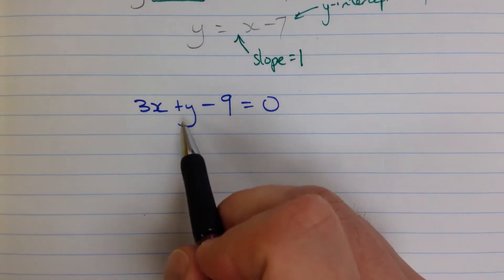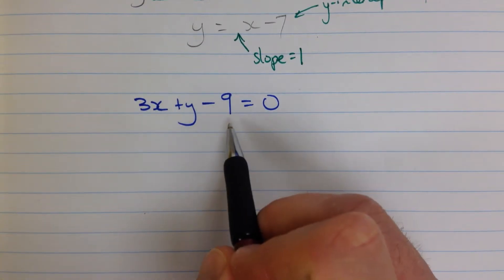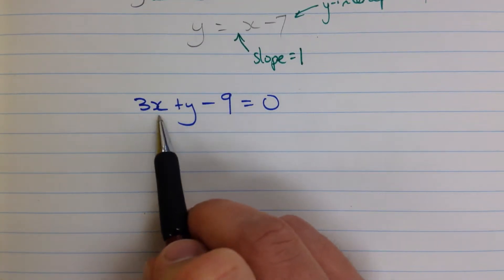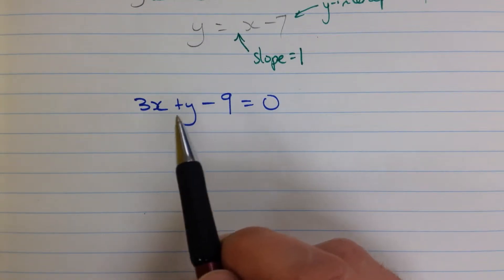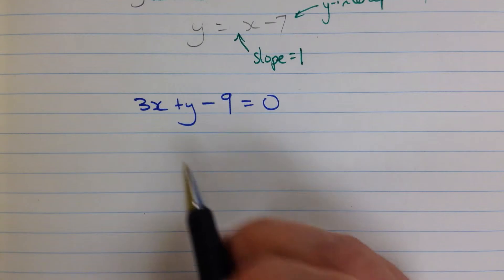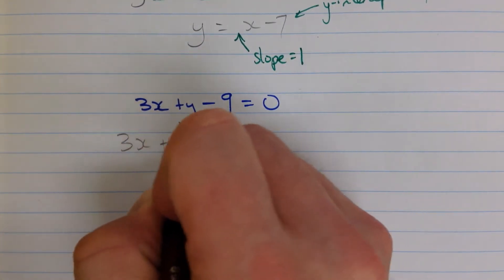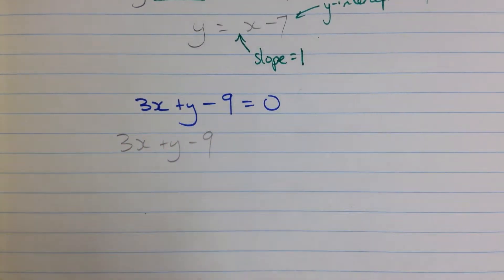Once again, we have our plus y that we want, but we have some other stuff with it. So we need to get rid of this 3x, and we need to get rid of this minus 9. And we're going to do that by doing the opposite operation to both sides of the equation.